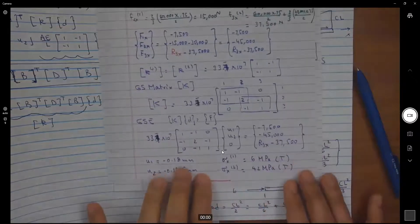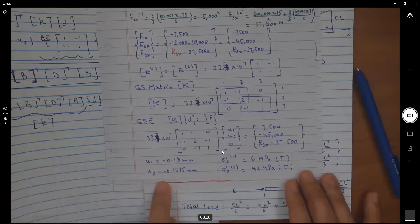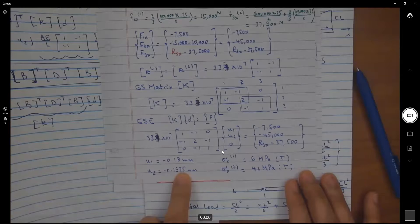Now, remember, we found that U1 was 0.18 millimeter. When I write here the equations and I solve for U1, I'm still getting the 0.18. But I also have a U2 of 0.1575 millimeter.